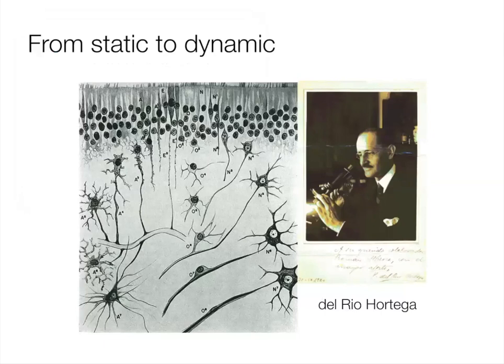One major problem with all kinds of single cell analysis is that they are destructive, so we can only get static snapshots. We can get a picture of what the cell is currently, but we cannot directly measure what the cell is going to be and where it's going to end up. This is actually very similar to a problem that faced the early histologist. This here is Del Rio Ortega, who discovered and named oligodendrocytes — the myelinating cells of the brain — with this microscope. His tool was the microscope looking at static histology sections, where you can see cells in their current state but cannot see where they're going or what they're going to become.